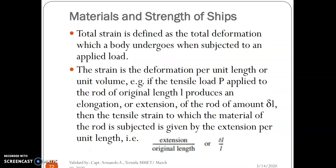Total strain is defined as the total deformation which a body undergoes when subjected to an applied load. The strain is the deformation per unit length. For example, if the tensile load P applied to the rod of original length produced an elongation or extension of the rod, then the tensile strain to which the material of the rod is subjected is given by the extension per unit, for example, extension over original length or extension over length.